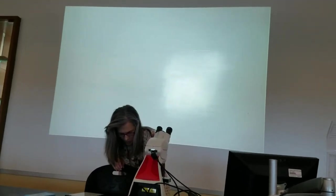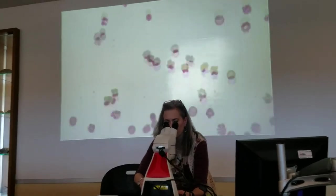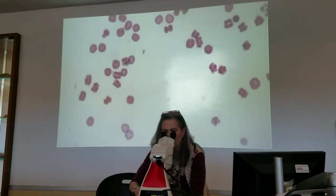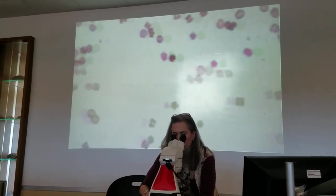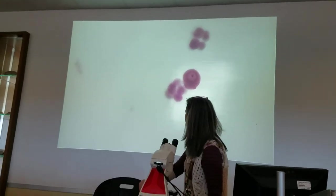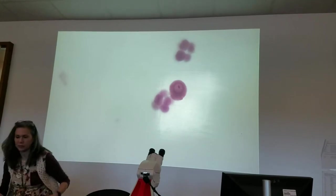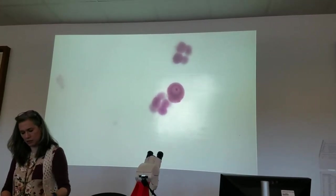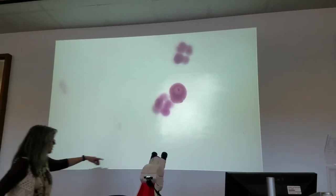The last slide is actually going to be development. The development slide goes through different stages that the egg and the zygote go through. So this is just different stages to identify as we go through. We're going to start off with that guy right there, front and center. That is an unfertilized egg.